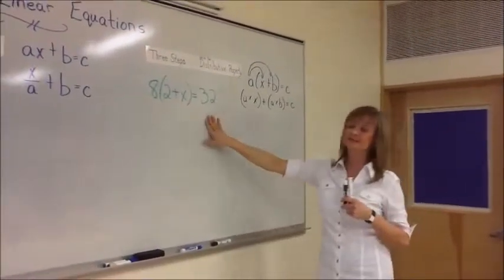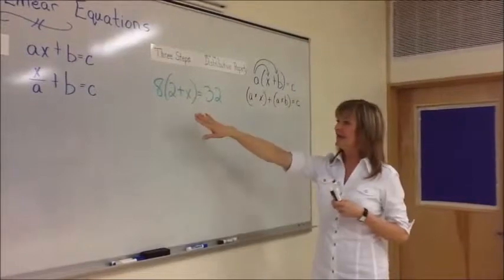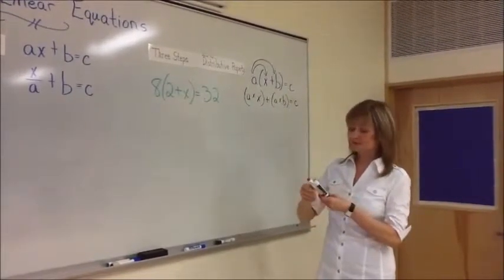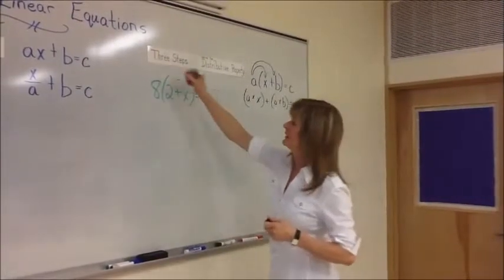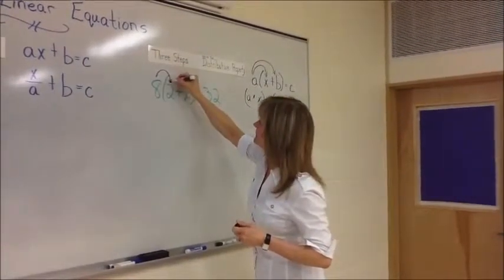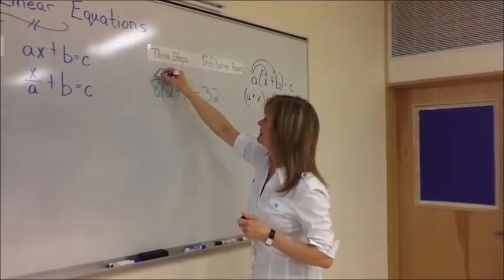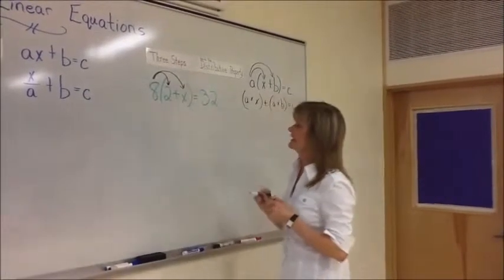Now we're going to take a look at this sample equation: eight times, in brackets, two plus X equals 32. Well, if we take this, you know that what we just did with that equation means eight times two, and then it means eight times X.